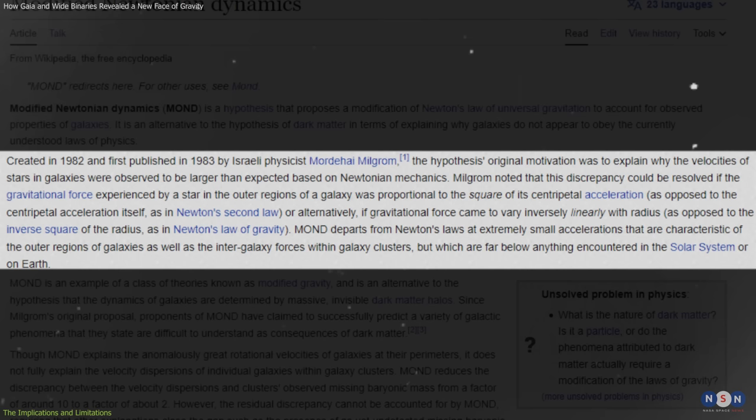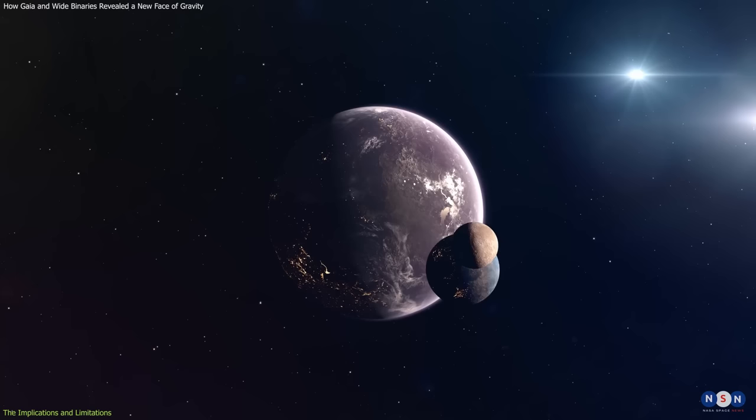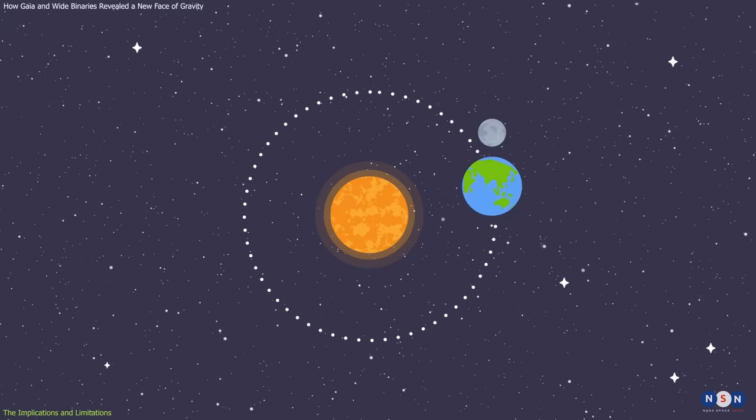Milgromian dynamics is a new theoretical framework that proposes that gravity behaves differently at low accelerations than at high accelerations, and that this can explain some of the puzzling observations in astronomy and cosmology.